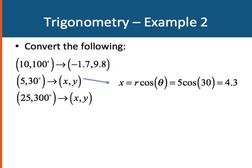For (5, 30), x is 5 times the cosine of 30, which would be 4.3. y is 5 sine 30, which is 2.5. So the ordered pair is 4.3, 2.5.